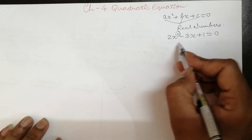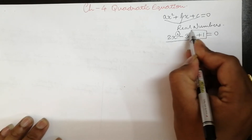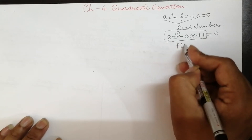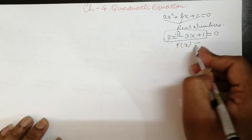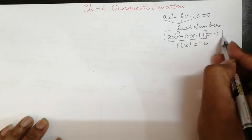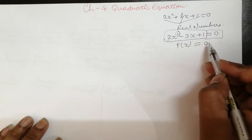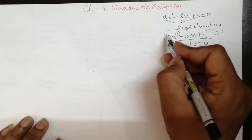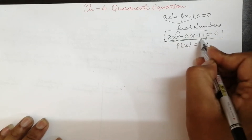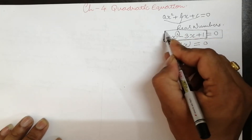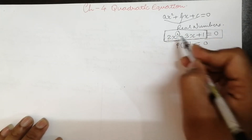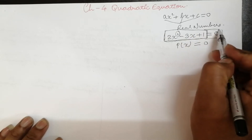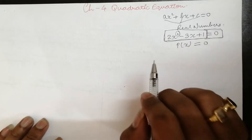The difference is just this: this complete term — we call it a polynomial. Quadratic polynomial p(x), and when it is equated to 0, as it is here, then in that case we call it a quadratic equation. If only the term remained, we would call it a quadratic polynomial, because the degree is 2. But when we equate it to 0, we make it a quadratic equation.